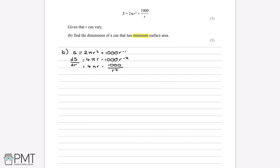To find the minimum, we set ds/dr = 0. This is analogous to finding where the gradient of a curve equals zero. So 4πr − 1000/r² = 0, since that is what ds/dr equals.